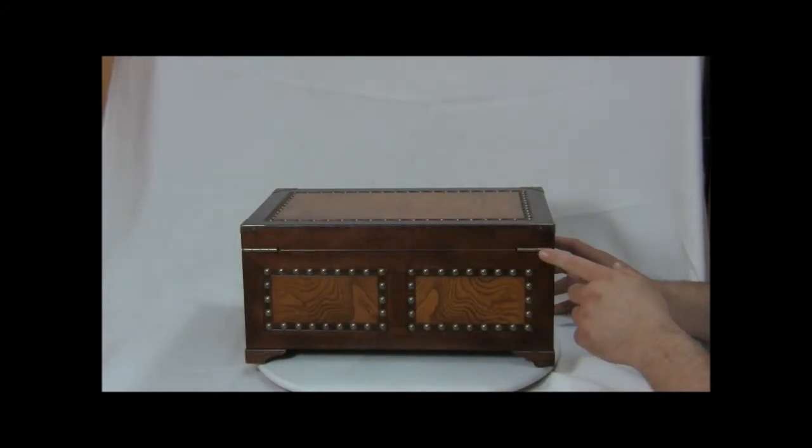There's two quadrant hinges. These are hidden, so when you open the box, they're going to be in minimal viewpoint. These also ensure the stability of the lid and the box as a whole.